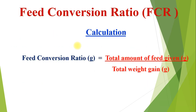Now, how to calculate the FCR? The calculation formula is: Feed Conversion Ratio equals total amount of feed given divided by total weight gain. The total feed refers to the full amount given for the entire duration of the culture period — whether 36 days, 90 days, or 120 days — divided by total weight gain over the farming duration.